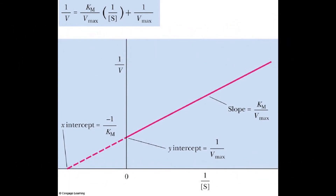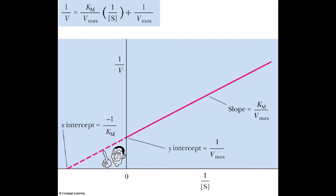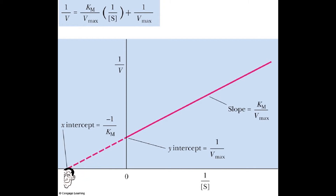We can actually look at the Y intercept, get the value for 1 over Vmax, and then do some algebra to find out Vmax. Another thing you can figure out is that we couldn't go negative with the original graph because you can't have a negative substrate concentration. But when you extrapolate the line, you can actually get negative 1 over Km, which is the X intercept. So we can get the Km value. If you have the Vmax, you can get the Kcat and determine the efficiency of the enzyme. The Km, remember, is determining the affinity that the enzyme has for the substrate.